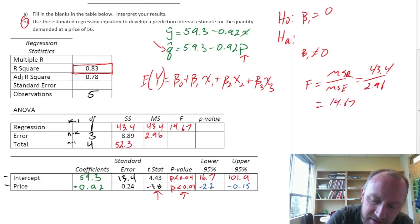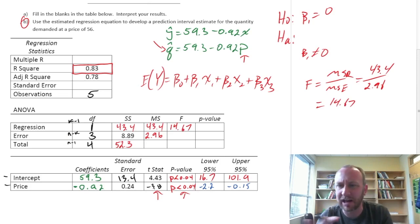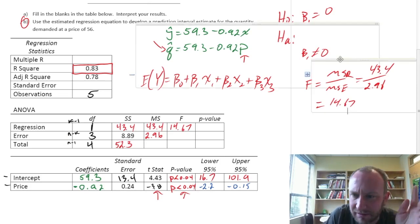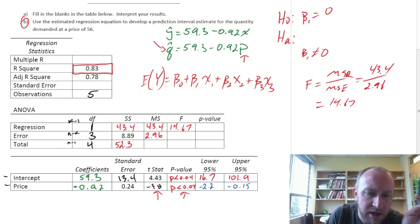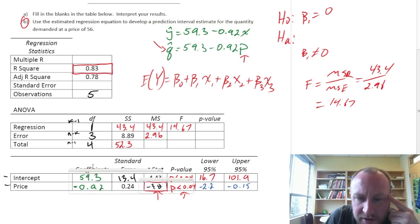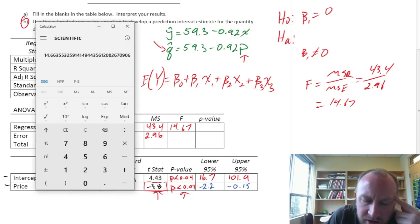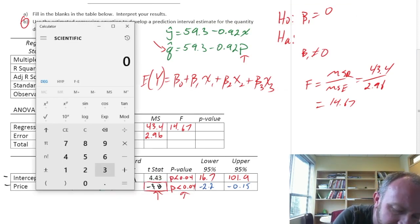Now, the other way that you can do this, and we might have some rounding error in here, so I'm going to keep expectations low. It might not be exactly the same, because of a rounding error. Is that, take this t-statistic here, negative 3.8. And if we just square that, and 3.8, negative, it doesn't matter, because we're going to square it.